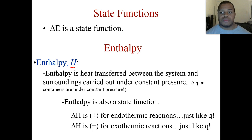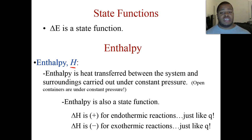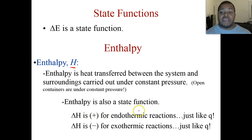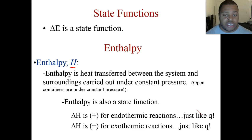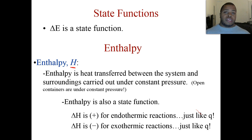If I have a beaker on the table, atmospheric pressure is being applied, so we end up with constant pressure. Enthalpy is also a state function. When delta H is positive, we have an endothermic reaction — we see a relationship between Q and delta H. When delta H is negative, it's exothermic, just like we had with Q. So we can start to predict some of the energy relationships based on these values.